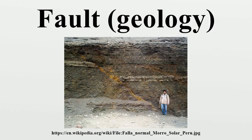Ring faults occur within collapsed volcanic calderas and the sites of bolide strikes, such as the Chesapeake Bay Impact Crater, and may be filled by ring dikes. Synthetic and antithetic faults are terms used to describe minor faults associated with a major fault. Synthetic faults dip in the same direction as the major fault, while antithetic faults dip in the opposite direction. These faults may be accompanied by rollover anticlines.